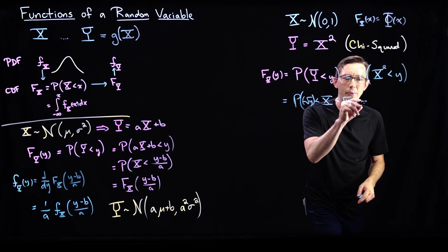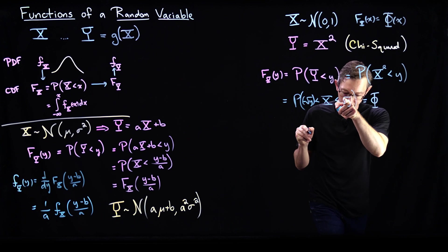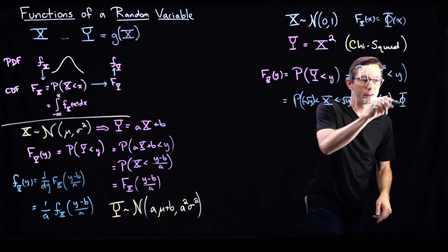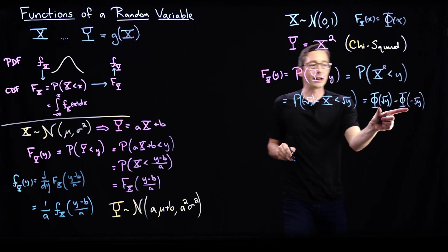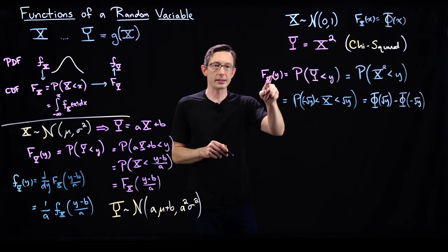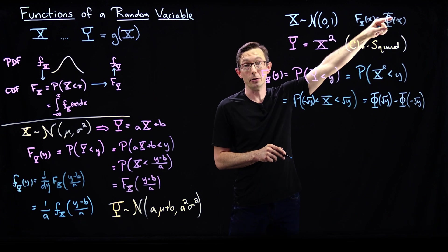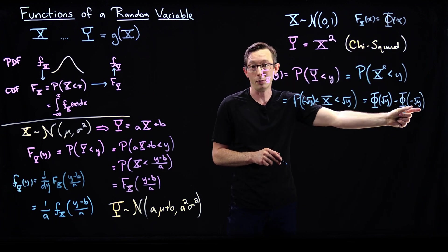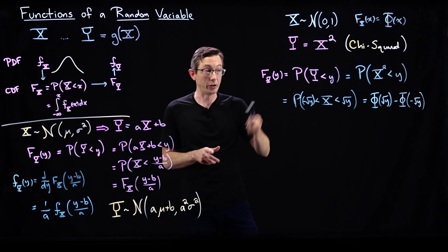So this probability is phi of root y minus phi of minus root y. That is the cumulative distribution function — it's this function that I know, and all I do is plug in root y and minus root y to get this cumulative distribution function.